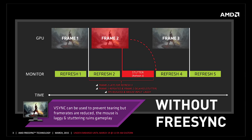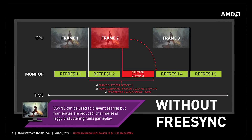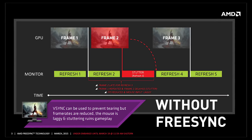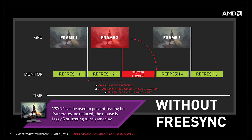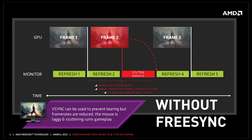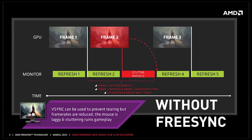This synchronization reduces stuttering and screen tearing compared to a monitor operating at a fixed refresh rate, say 60 hertz, displaying a game running at an unmatched render rate like 54 fps.